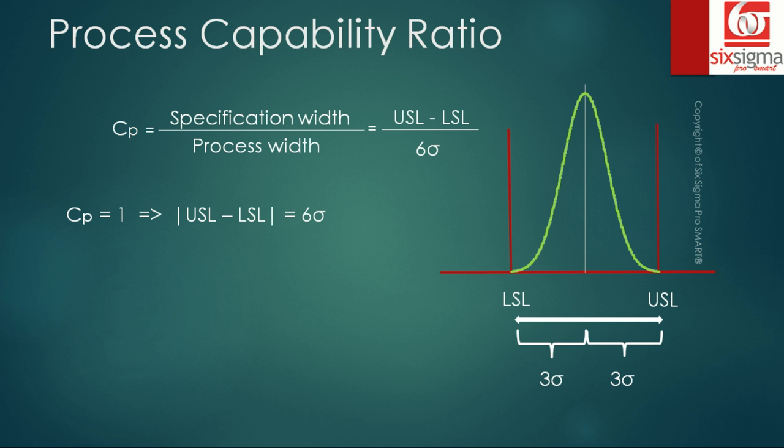What happens when the CP value is less than one? Well, as we can see in this case, the USL minus LSL or the specification width must be less than the denominator which is six sigma. It means we have defects in the process. We are going beyond the specification limits. We are incurring waste.